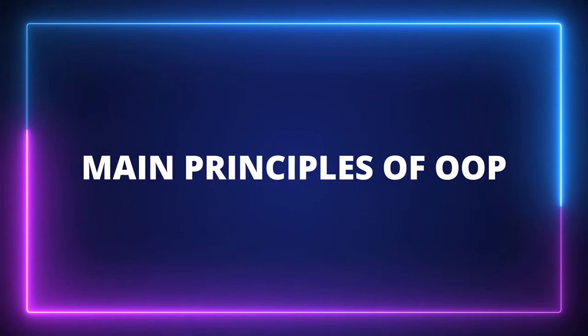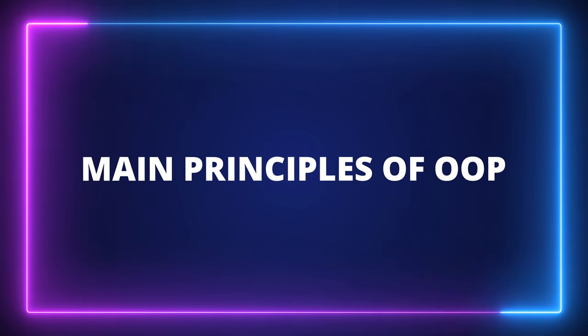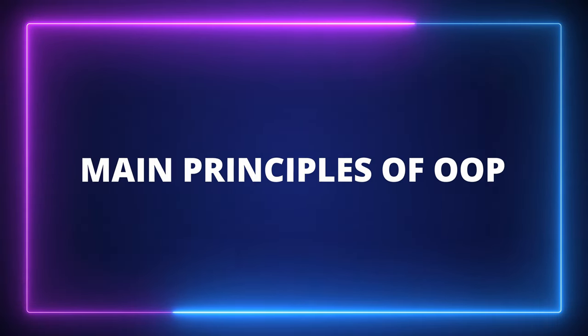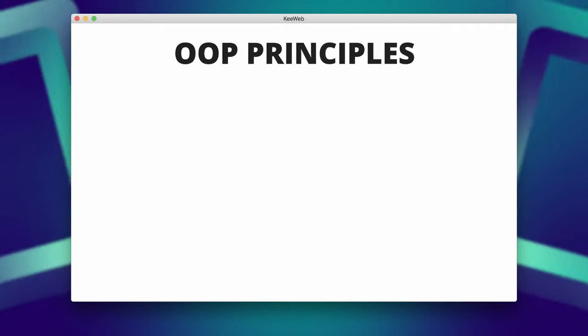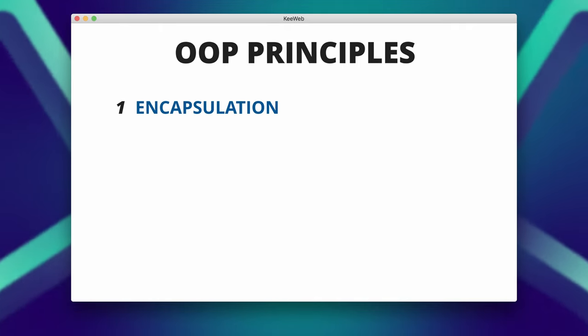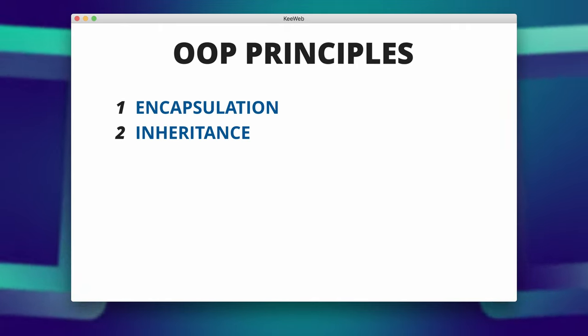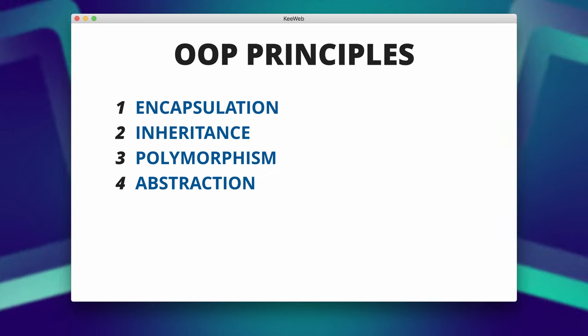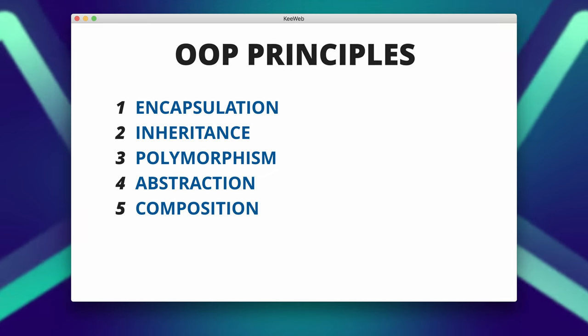What are the main principles of object-oriented programming? The main principles are encapsulation, inheritance, polymorphism, abstraction, and composition.